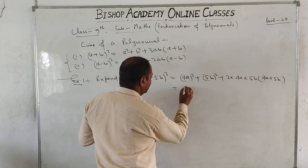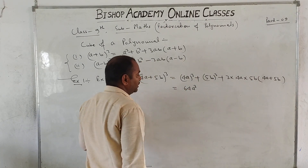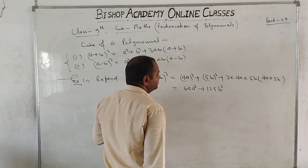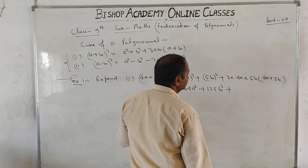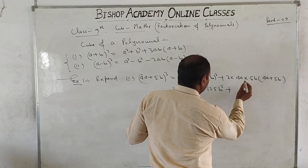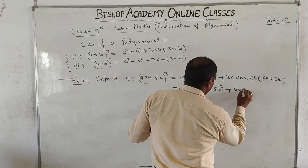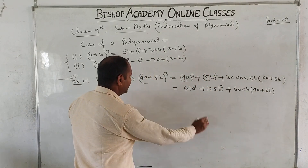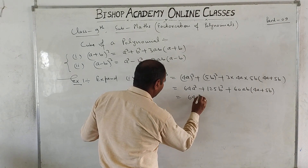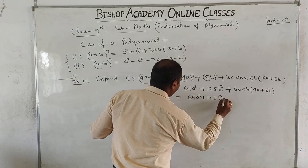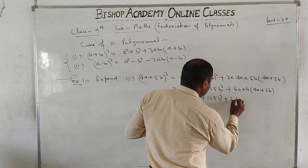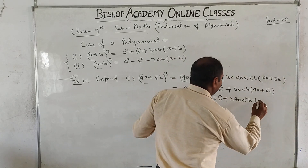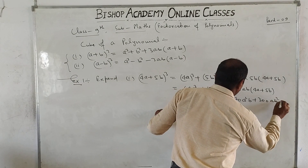4A whole cube equals 64A cube. 5B whole cube equals 125B cube. So expanding: 64A cube plus 125B cube plus 3 times 4A times 5B in bracket 4A plus 5B, which gives 64A cube plus 125B cube plus 240A²B plus 300AB².